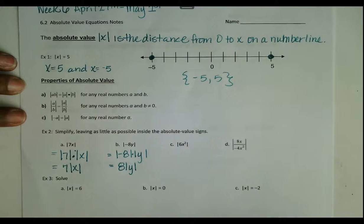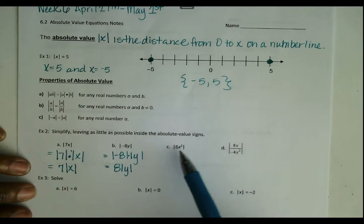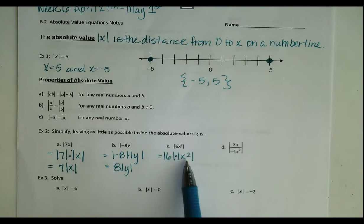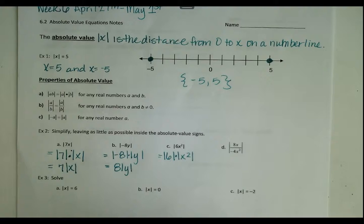Letter C: we have 6x squared inside the absolute value. We separate that into two parts — the absolute value of 6 times the absolute value of x squared. Both of these can be simplified: the absolute value of 6 is just 6, and the absolute value of x squared is simply x squared. No matter what value x is, positive or negative, when you square it the result is always positive, so the absolute value bars are not needed. Our final answer is 6x squared.